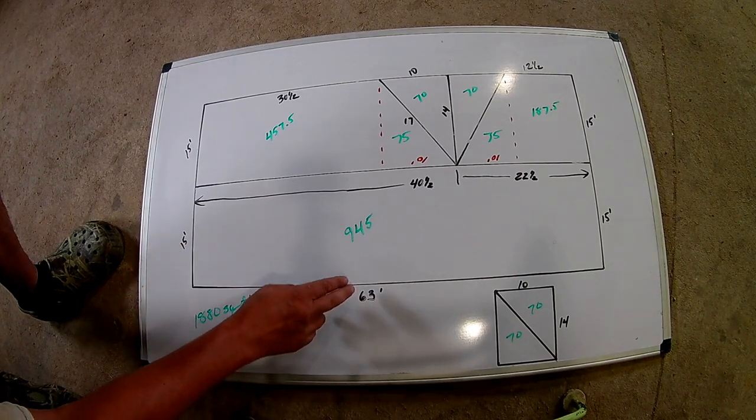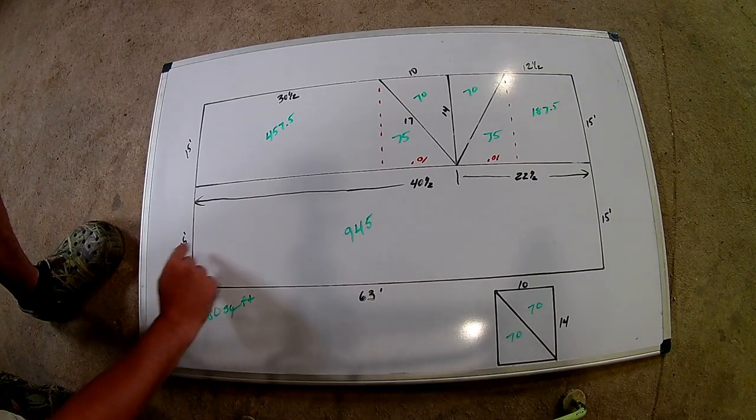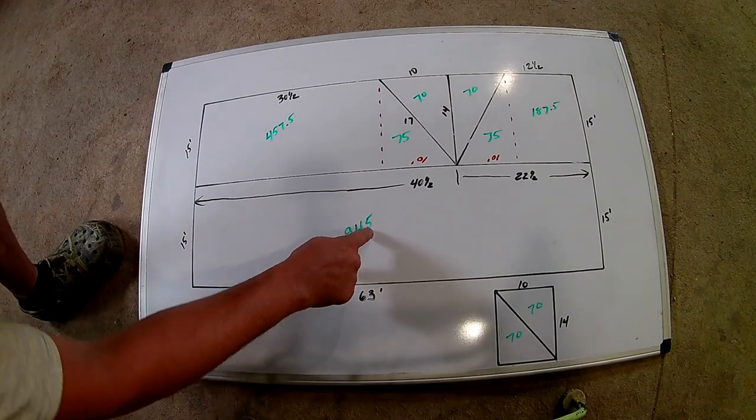So we know that this back side was 63 feet by 15 feet. So in order to figure out the square footage, we're going to take 63 and we're going to multiply it by 15. That is going to give us 945 square feet.